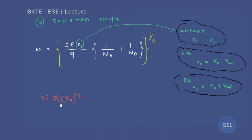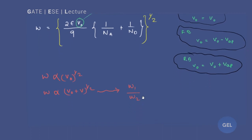I can write W is directly proportional to (V₀ + V)^(1/2) in the reverse bias case. From here, in the reverse bias case: W₁/W₂ = [(V₀ + V₁)/(V₀ + V₂)]^(1/2). This is important for engineering service exams and gate exams. Similarly, in the forward bias case: W₁/W₂ = [(V₀ - V₁)/(V₀ - V₂)]^(1/2).